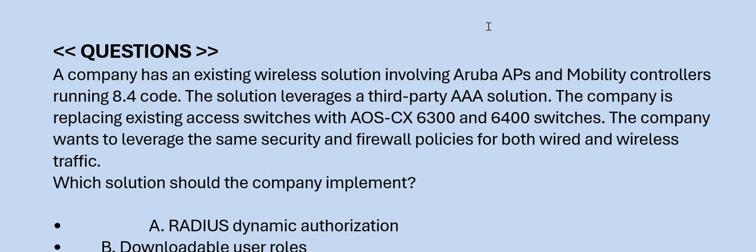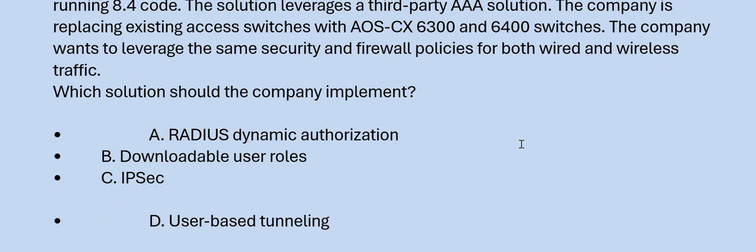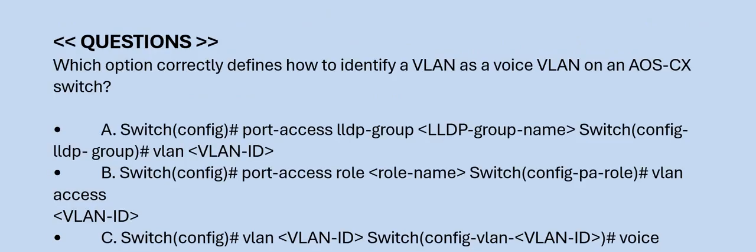Question: A company has an existing wireless solution involving Aruba APs and Mobility Controllers running 8.4 code, leveraging a third-party AAA solution. The company is replacing existing access switches with AOS-CX 6300 and 6400 switches and wants to leverage the same security and firewall policies for both wired and wireless traffic. Which solution should the company implement? Option A: Radius Dynamic Authorization. Option B: Downloadable User Roles. Option C: IPsec. Option D: User Based Tunneling. The correct answer is Option A.